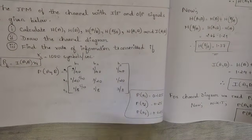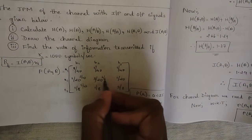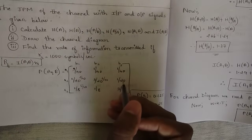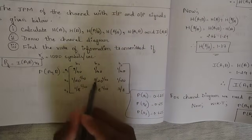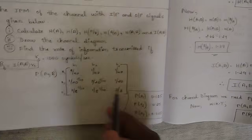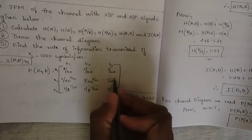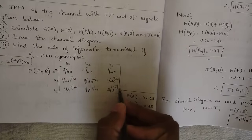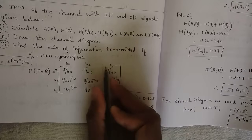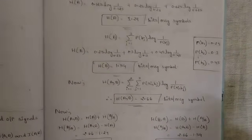Continuing with P(B): for P(B2), making the denominator 40: 1/40 + 6/40 + 5/40 = 12/40 = 0.3. For P(B3): 1/40 + 2/40 + 15/40 = 18/40 = 0.45. Please verify these in a calculator. Now you have all the probabilities for sets A and B.